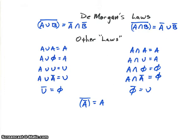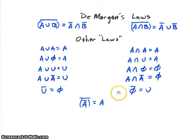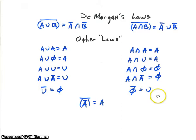Some other laws are shown here, and most are quite intuitive. A union A is A, and so on. The not of the universal set is the empty set, and the not of the empty set is the universal set. If we apply not to a set twice, we get back to our original set.